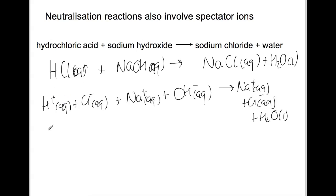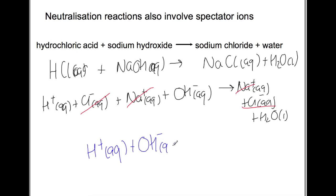Now we go through and see what's changed and what hasn't. H+ is now part of water so that's not a spectator ion. Cl⁻ hasn't changed. Na+ hasn't changed. OH⁻ is now part of water. So rewriting without the spectator ions, a neutralization reaction is an H+ and an OH⁻ ion joining together to produce water — which makes sense because we're neutralizing the acid to produce water. The salt is just a byproduct, and those ions remain in solution on either side of the arrow.